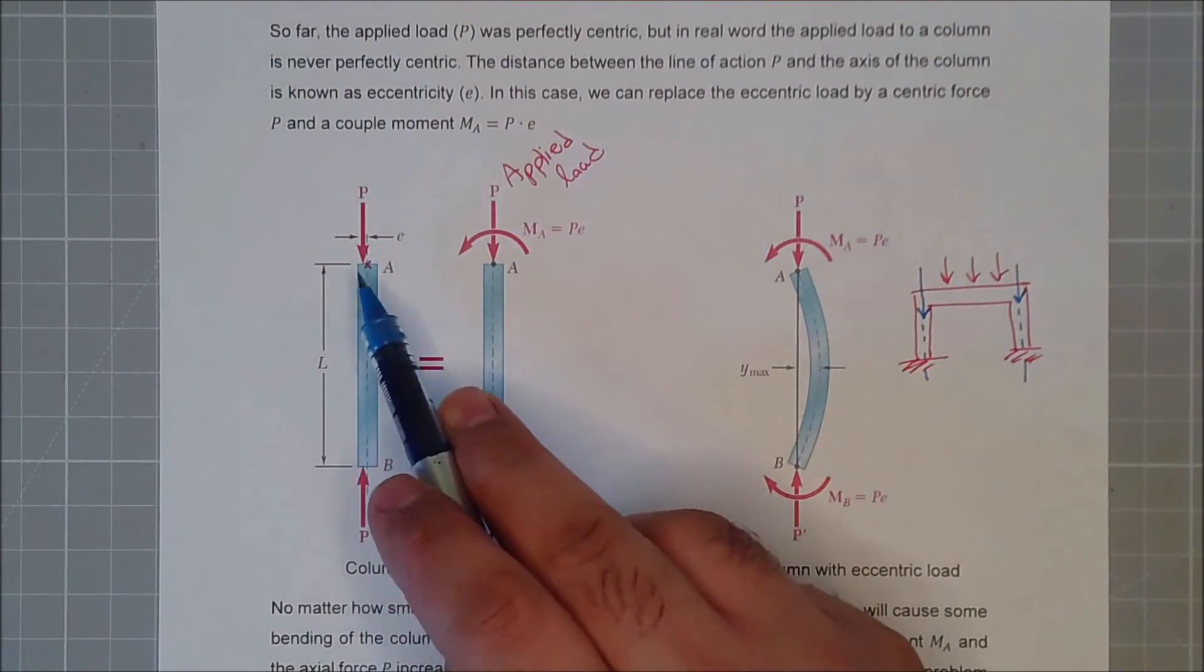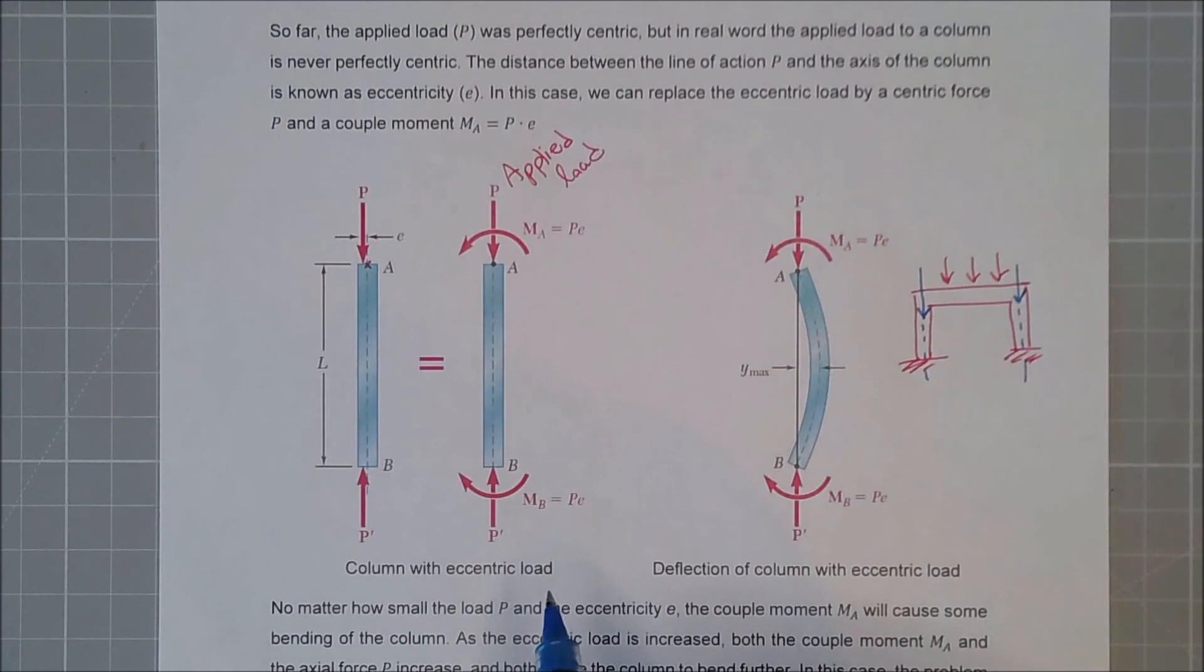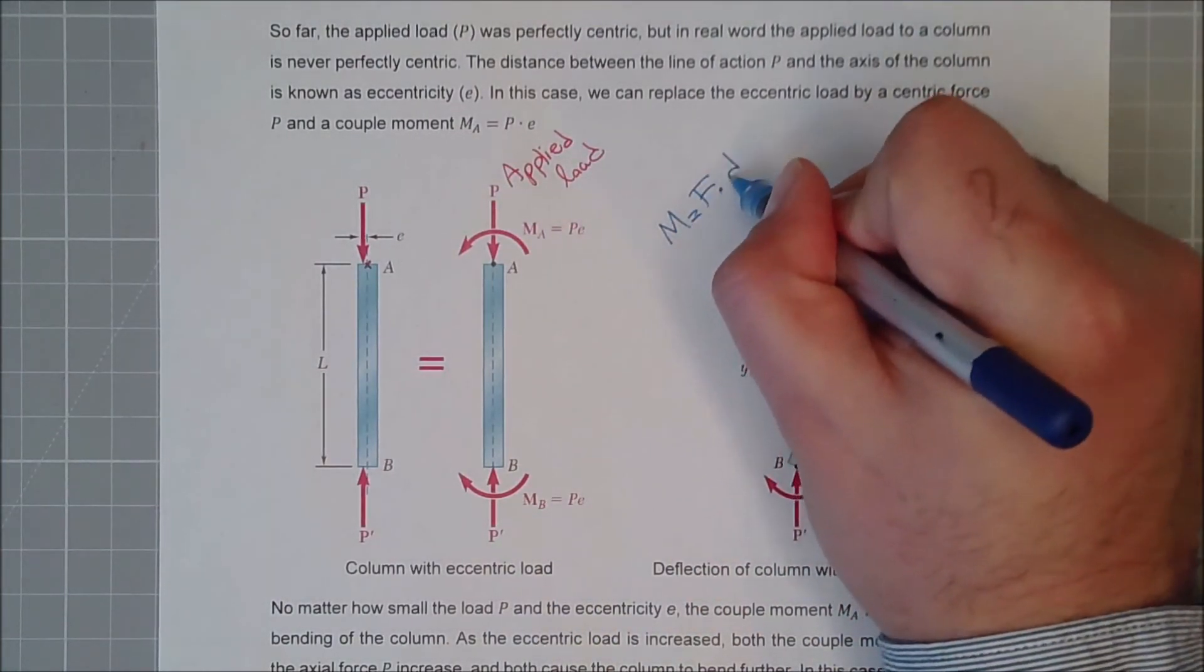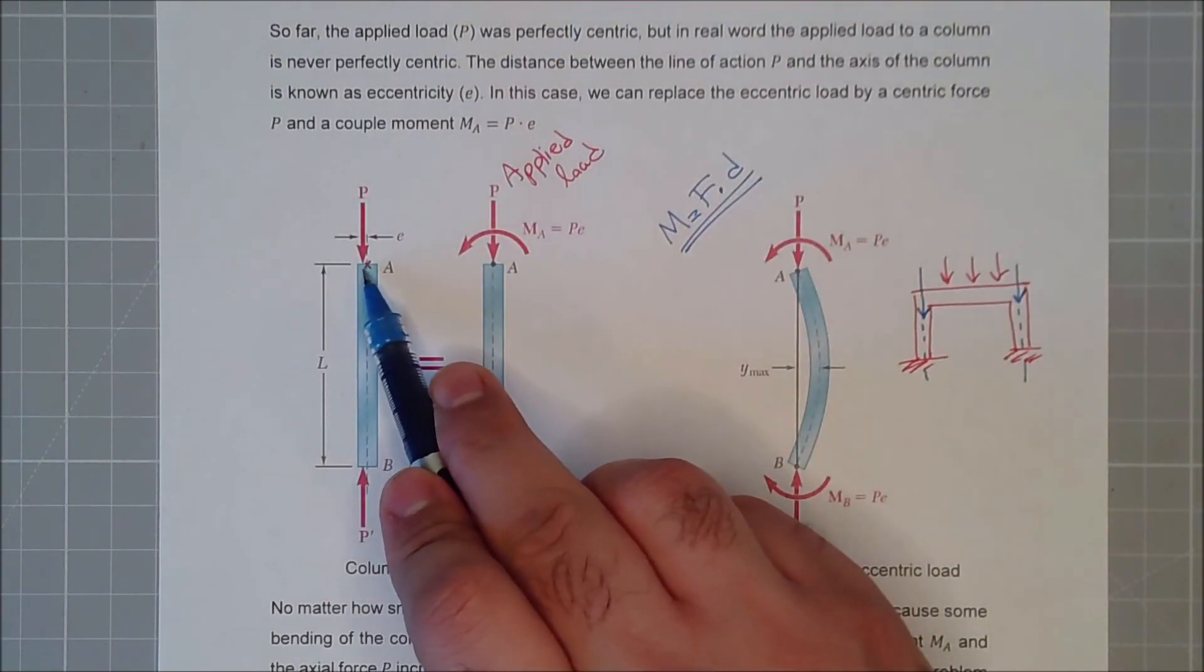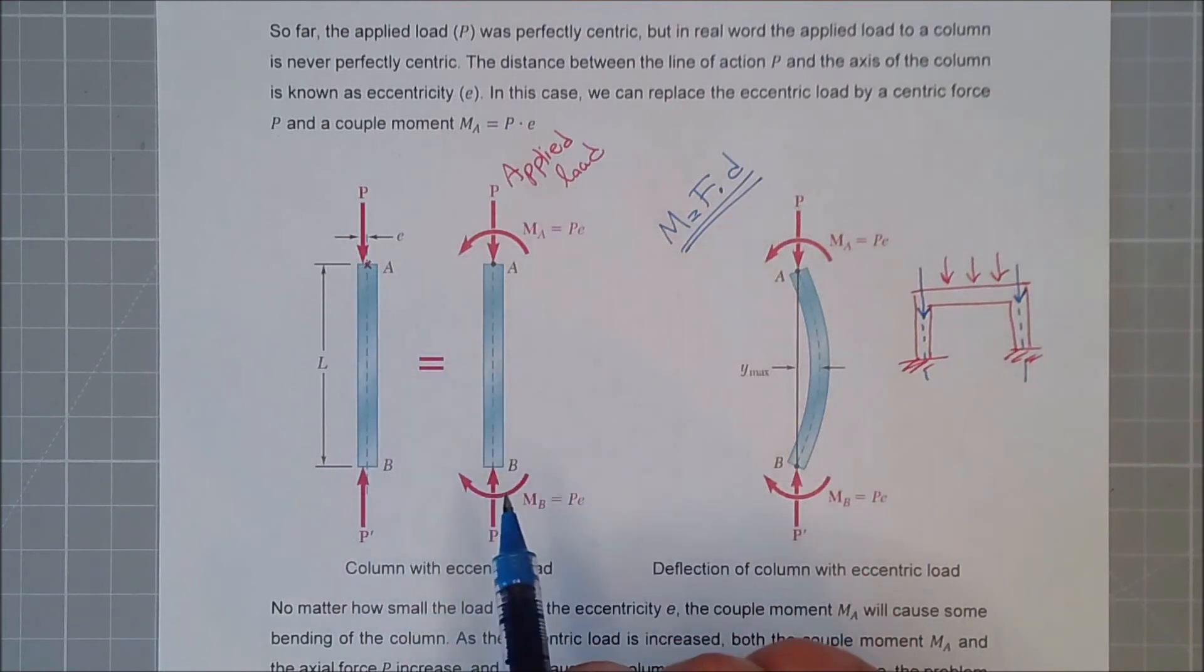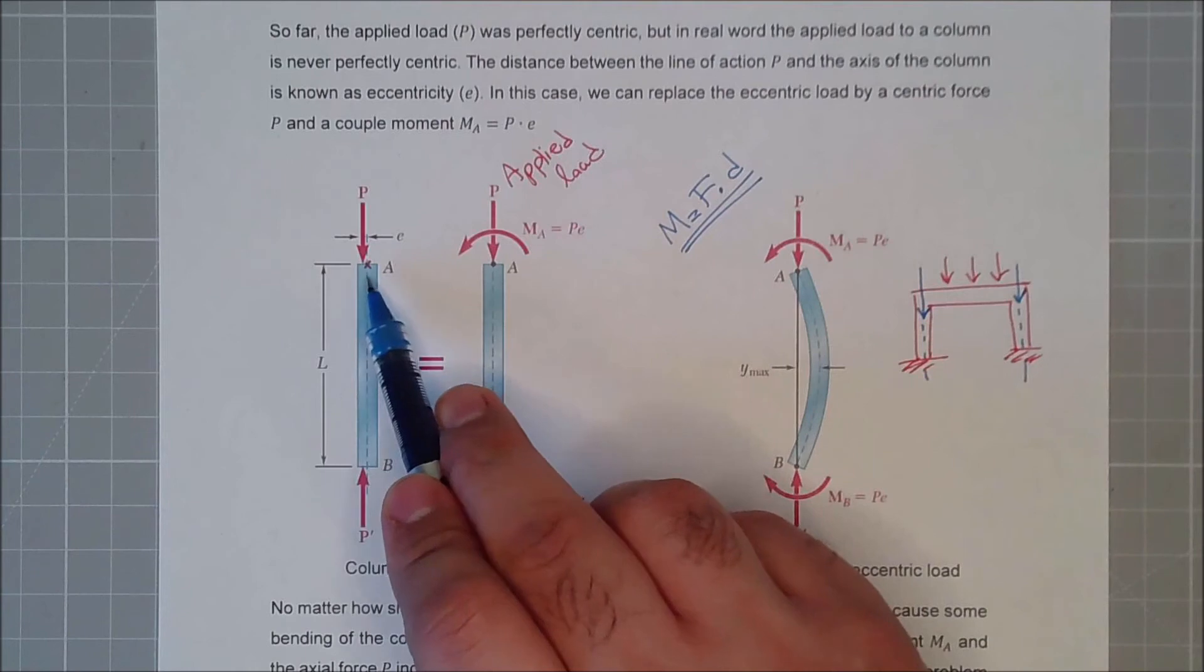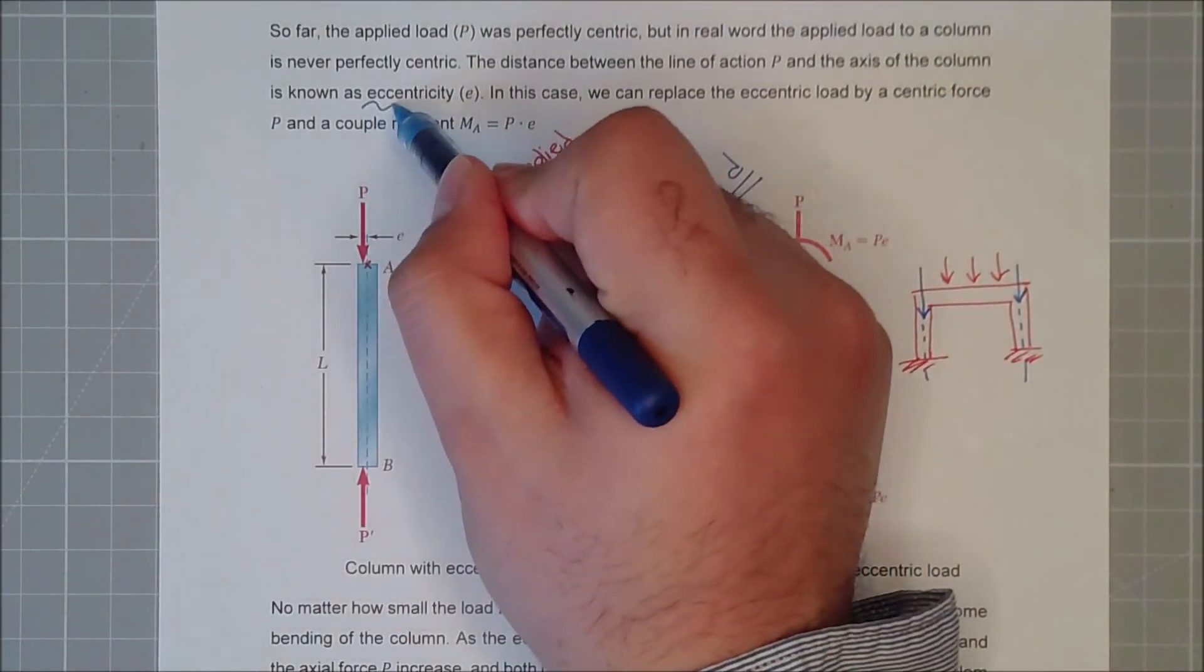You see, if this is the axis, the blue dashed line, the force is not perfectly at that point. And as we said, because moment is force times its perpendicular distance, because of this, let's say, a little bit distance between the centroid and the force applied, there will be a moment due to this distance. That distance is called eccentricity.